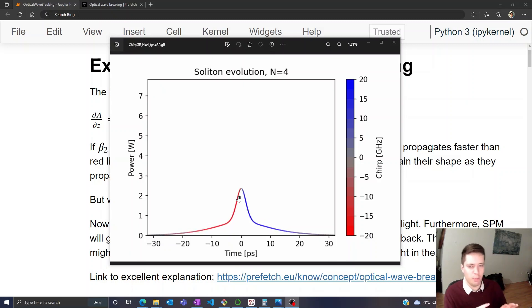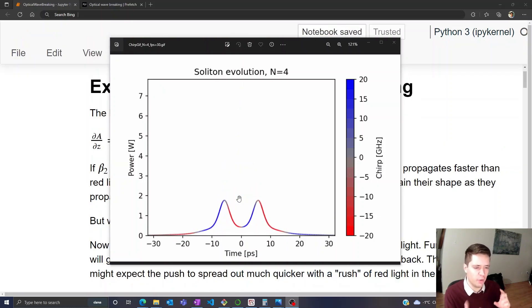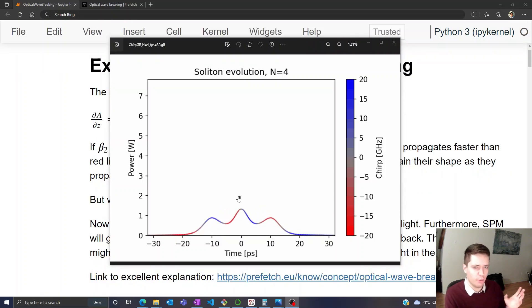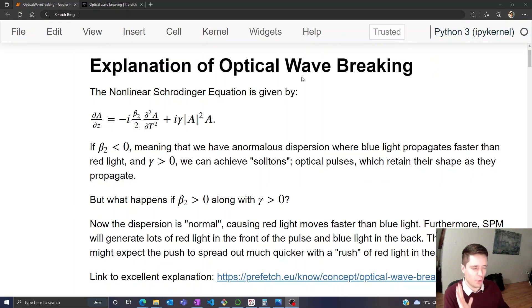So remember that all of this behavior depends on the sign of the dispersion being negative. But what happens if we make that sign positive? Do we get some kind of other interesting photonic behavior? Well, let's see what happens. So actually what we get is something called optical wave breaking.